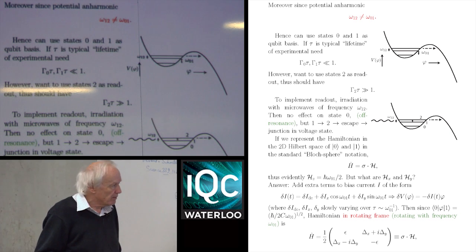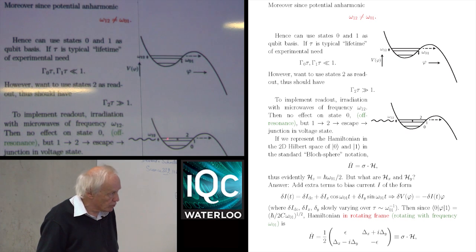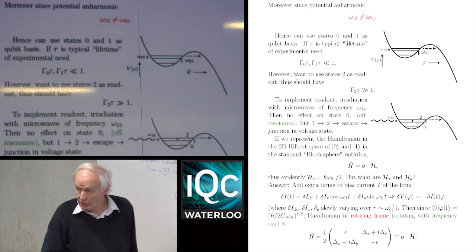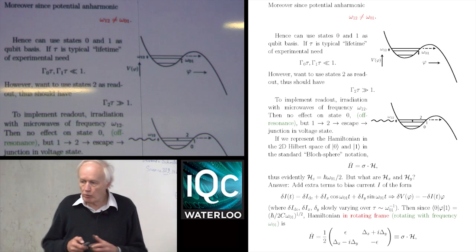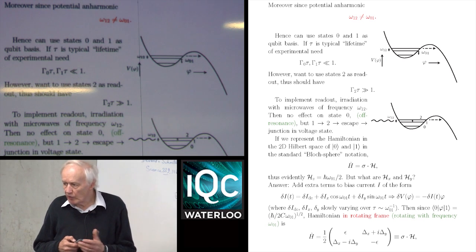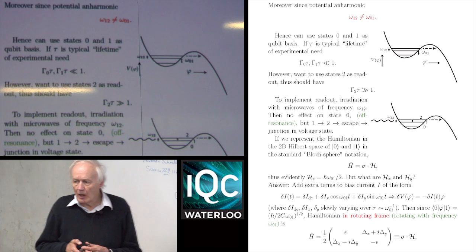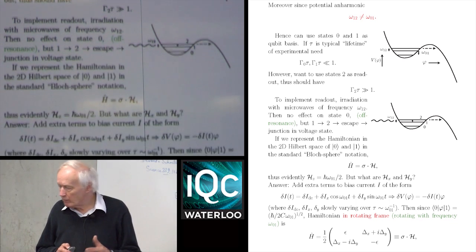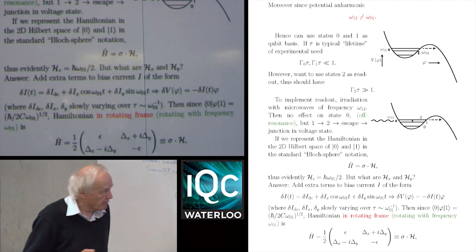To implement the readout for this system, what you need to do is irradiate it with radiation which is resonant for the transition between the first and second excited states. If your system is initially in the ground state, that has no effect because you're off-resonance for that transition. On the other hand, if it's in the first excited state, you will kick it up into the second excited state, it'll tunnel out, and the effect is that it starts running down the washboard potential. By the Josephson relation — the rate of change of φ is proportional to the voltage — that gives you a voltage across the junction of the order of twice the gap divided by e, which is millivolts and certainly detectable in your apparatus.